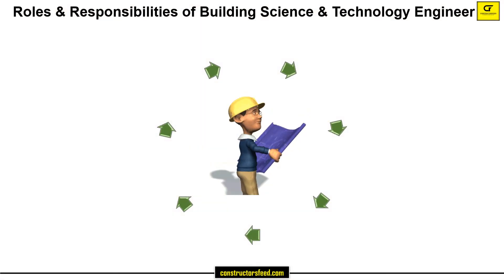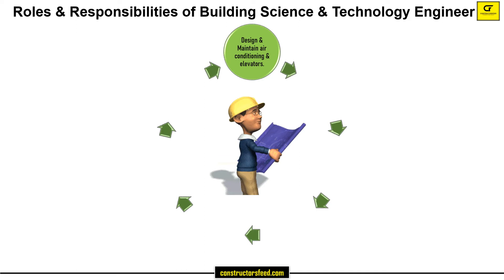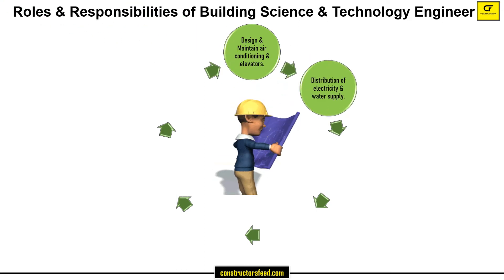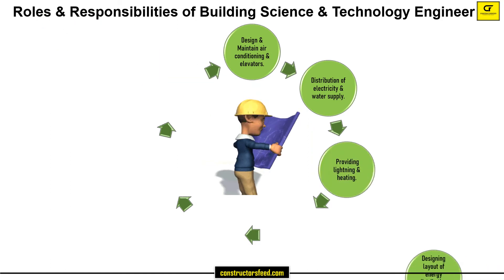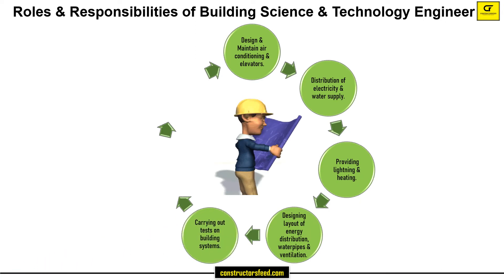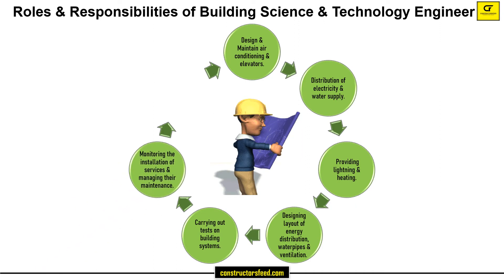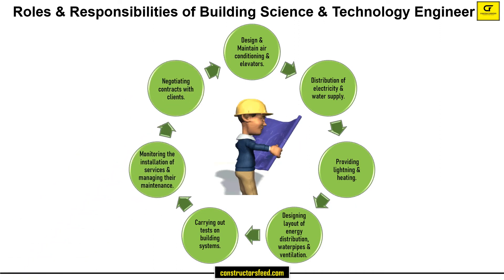Some of the roles and responsibilities of a Building Science and Technology Engineer include: Design and Maintain Air Conditioning and Elevators, Distribution of Electricity and Water Supply, Providing Lighting and Heating, Designing Layout of Energy Distribution Waste Pipes and Ventilation, Carrying Out Tests on Building Systems, Monitoring the Installation of Services and Managing their Maintenance, and Negotiating Contracts with Clients.